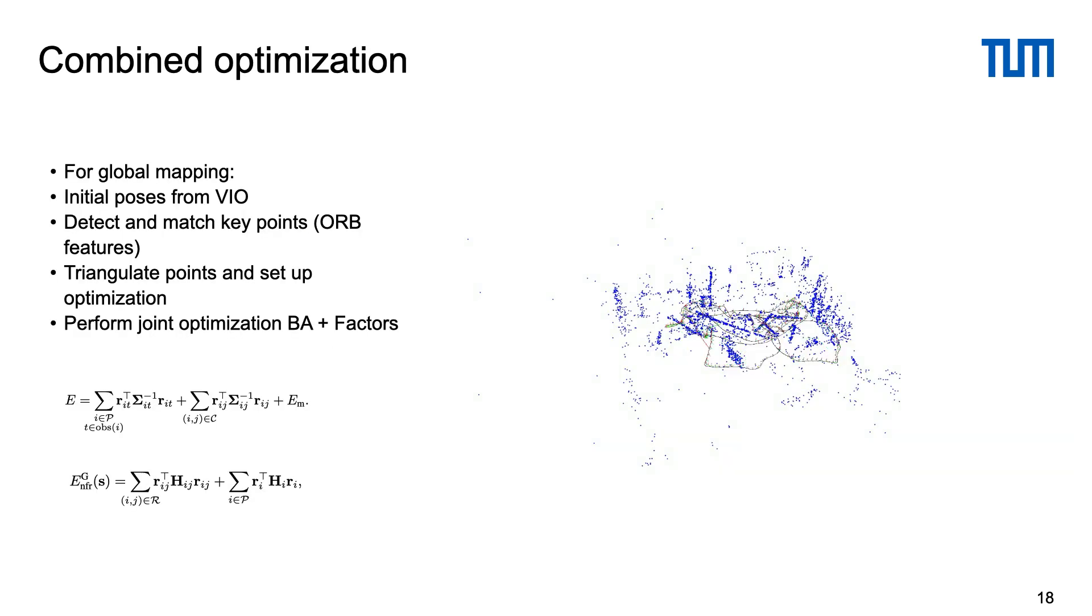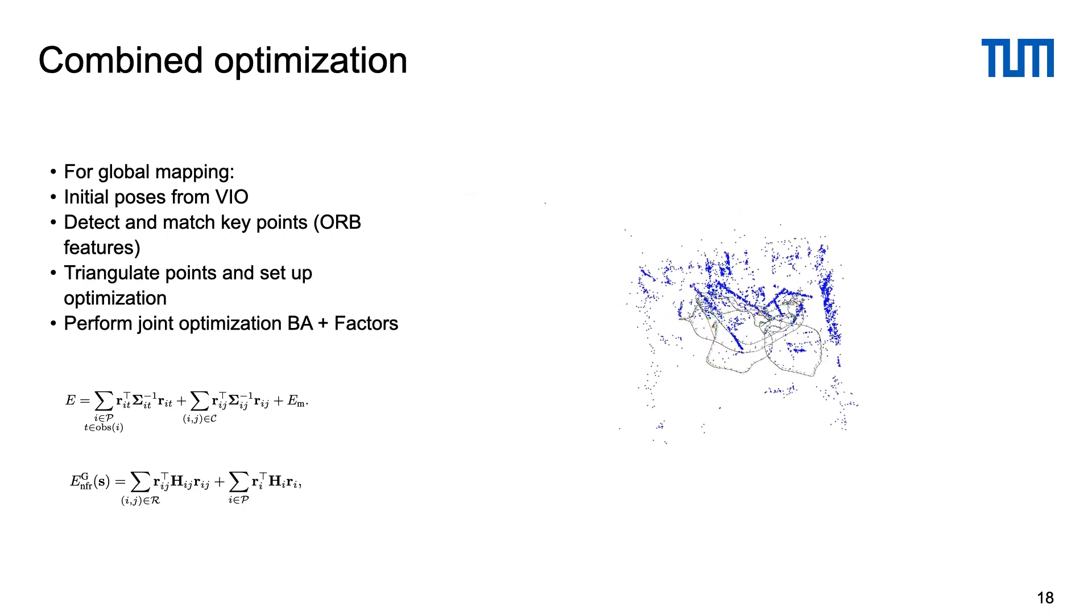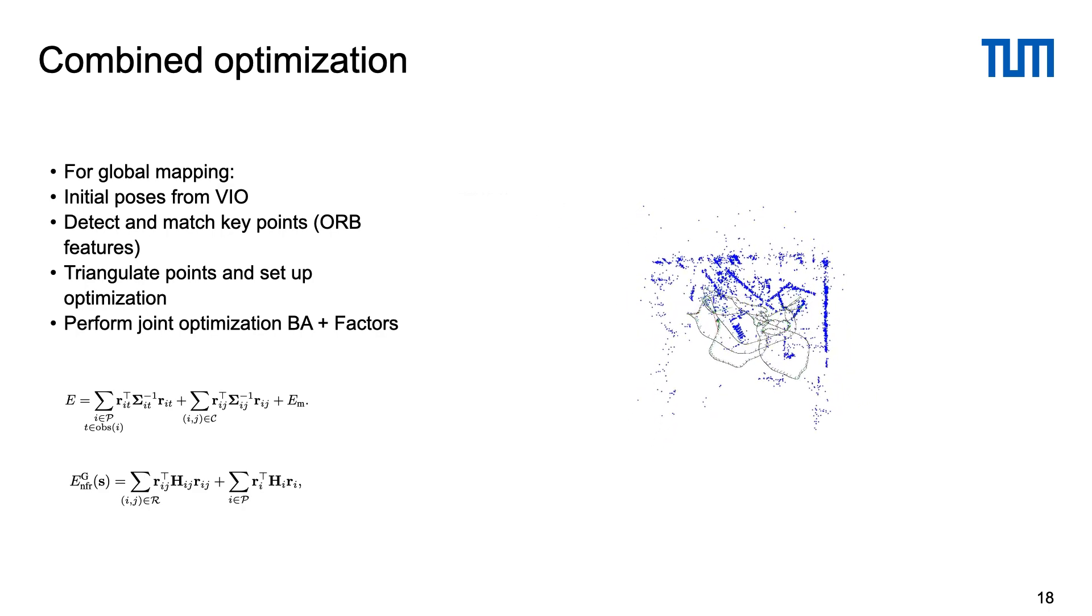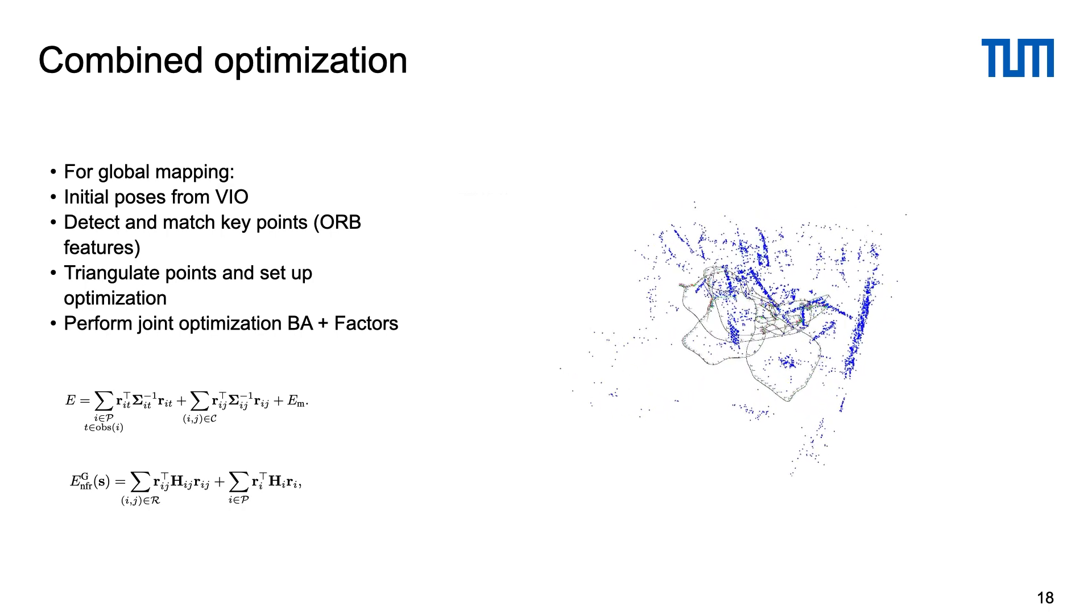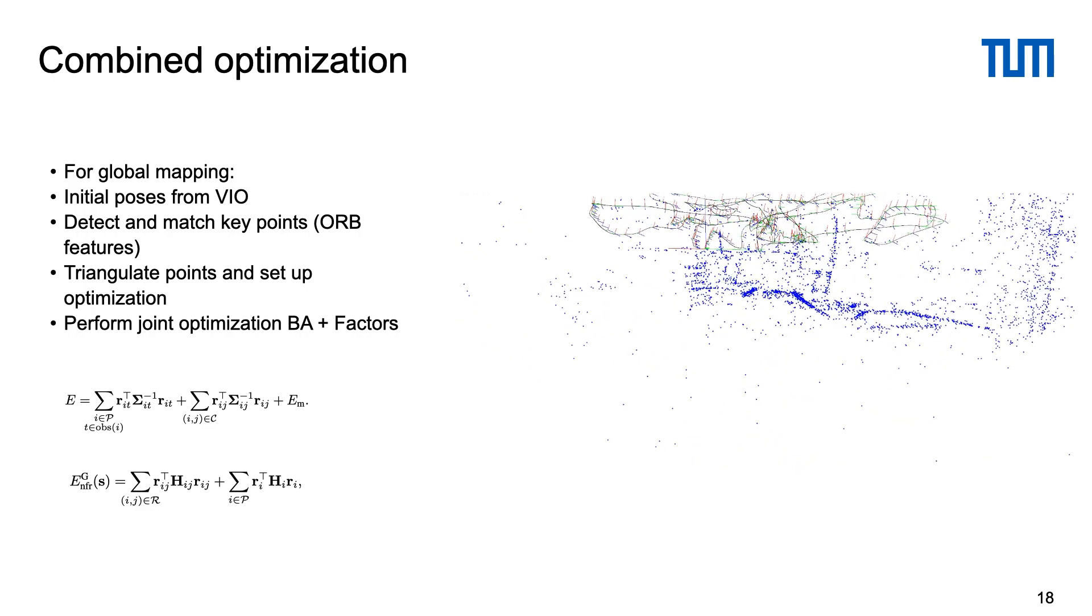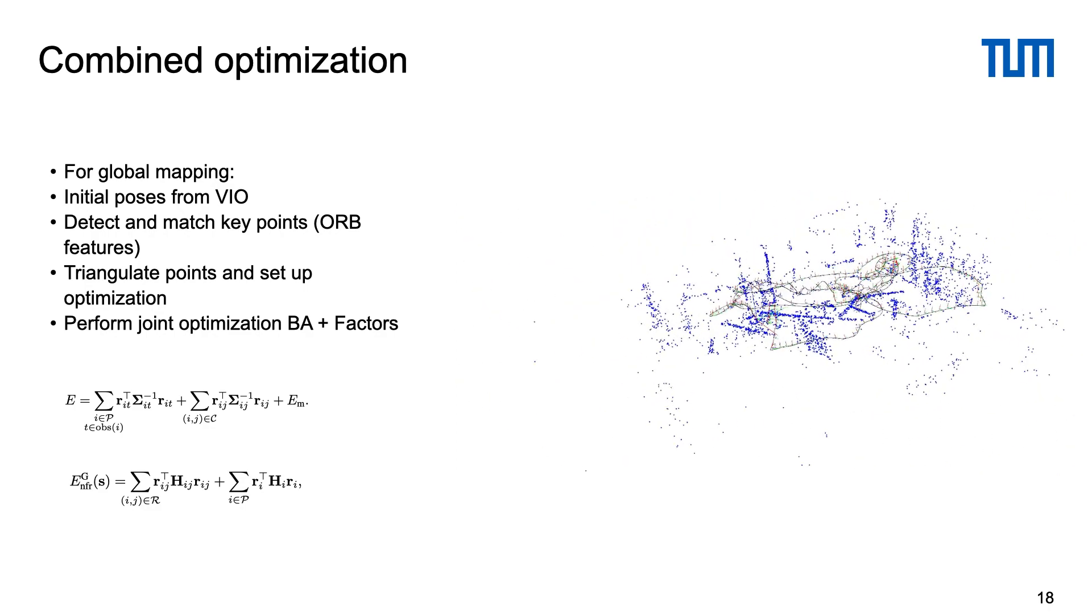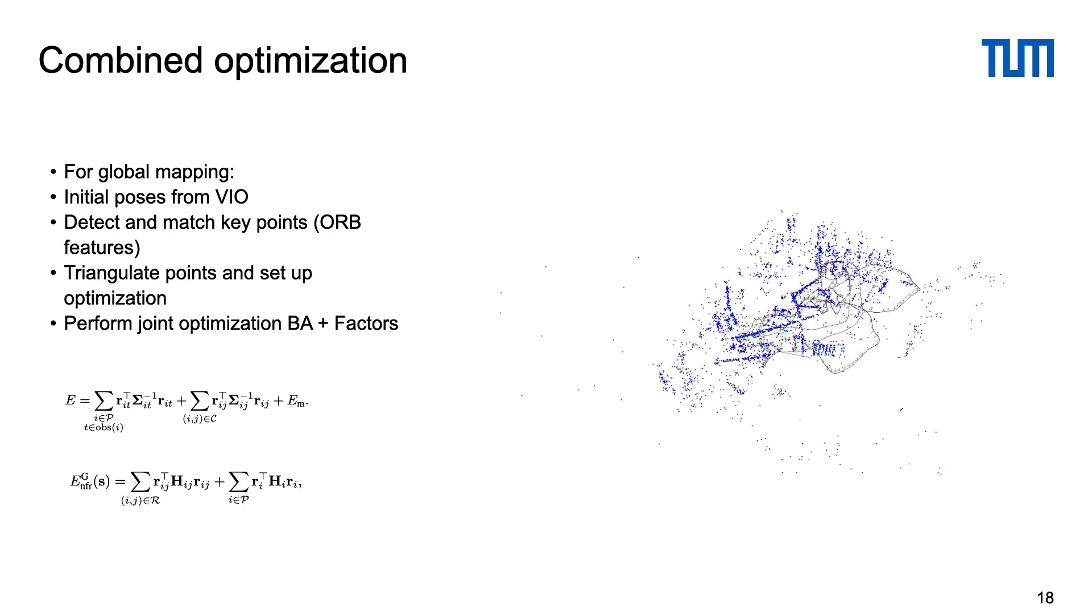For computing the global map we initialize the keyframes with the poses from the VIO. We detect and match the keypoints to find loop closures and combine them with recovered factors in the joint optimization problem. This way we capture the information from the IMU and short-term vision. This results in a globally consistent gravity-aligned map that can be further used for tasks like visual localization or 3D reconstruction.